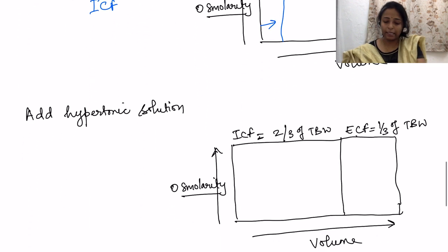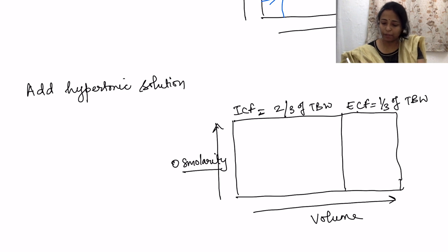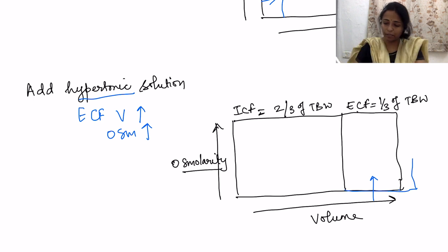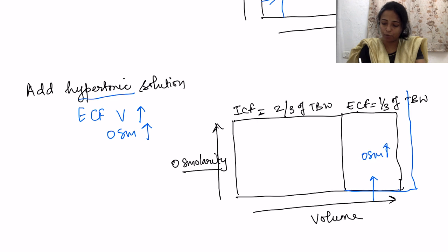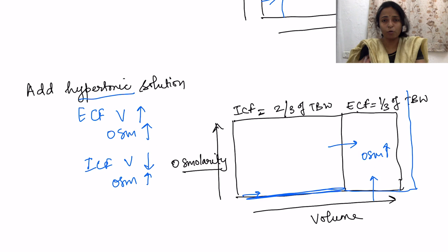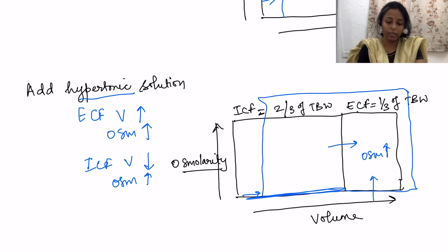Adding hypertonic solution to ECF increases ECF volume, and since it is hypertonic, osmolarity also increases. Water then moves from ICF to ECF because ECF osmolarity is higher, so ICF volume decreases. Osmolarity increases in both compartments and ultimately becomes the same in both. So the result of adding hypertonic solution is: ECF volume increases, ICF volume decreases, and osmolarity increases in both compartments.